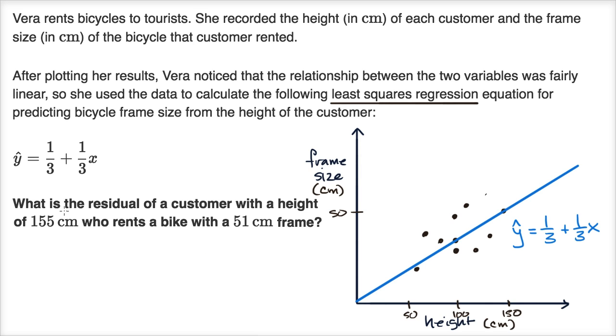But they ask us, what is the residual of a customer with a height of 155 centimeters, who rents a bike with a 51 centimeter frame? So how do we think about this?